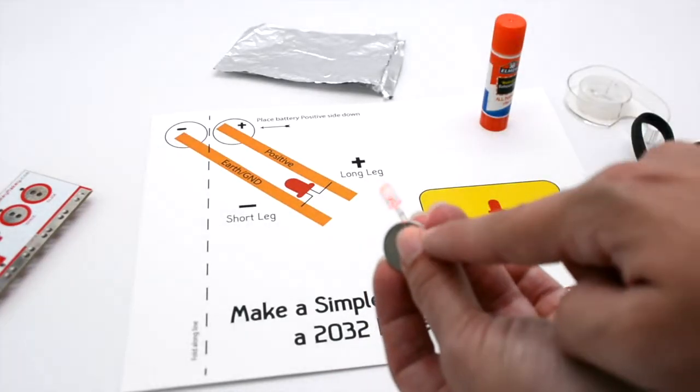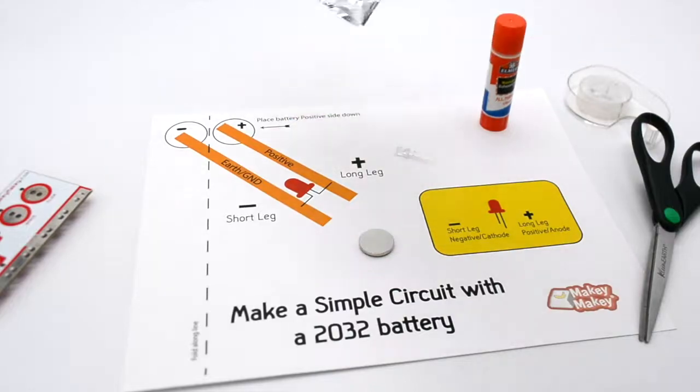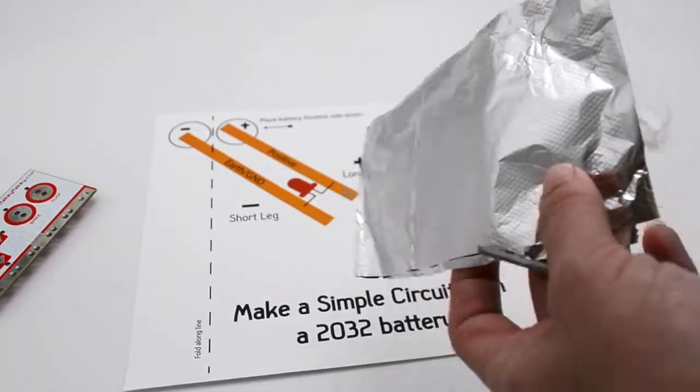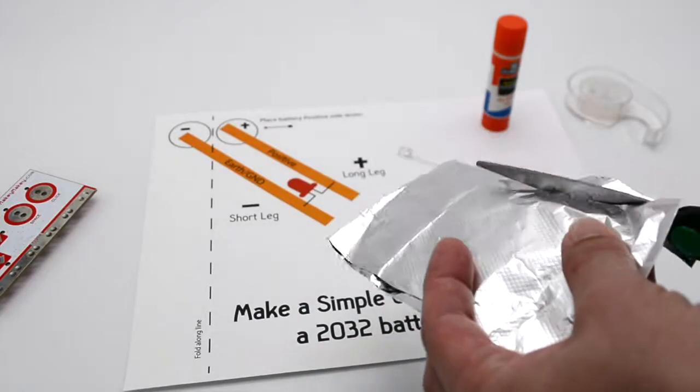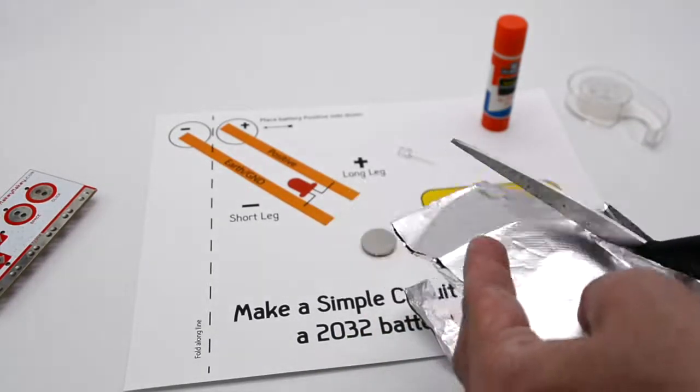Let's extend the legs of the LED by using some of that foil on this template. So we'll just cut two pieces. I'll cut a piece for the positive and a piece for the negative.